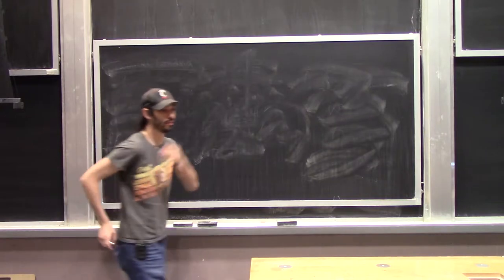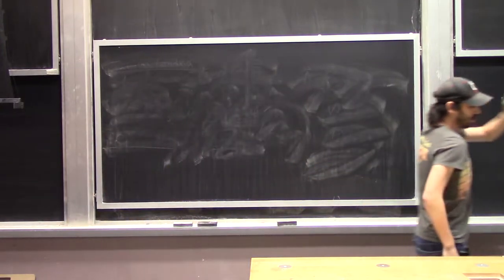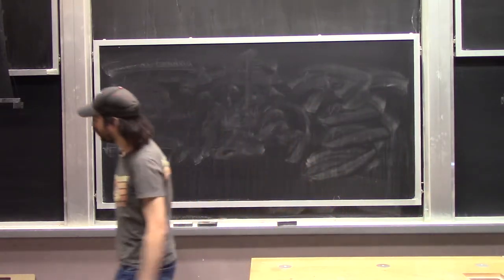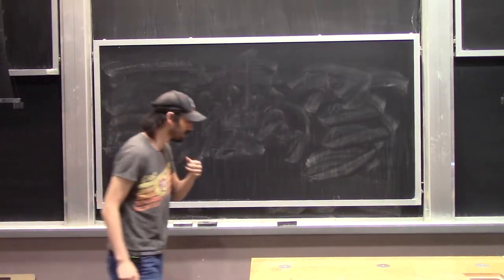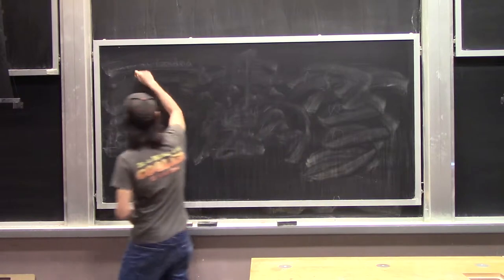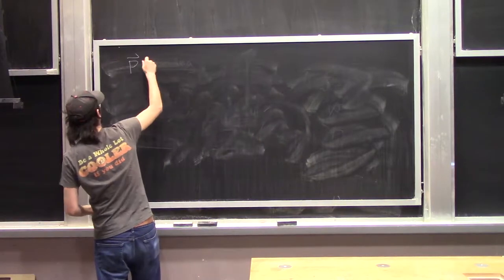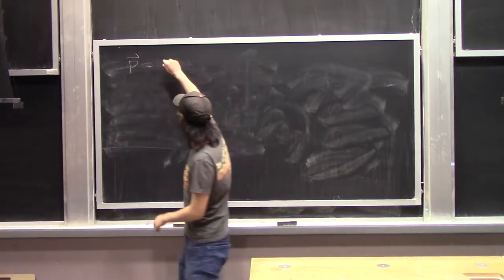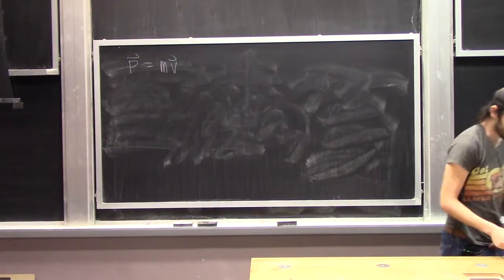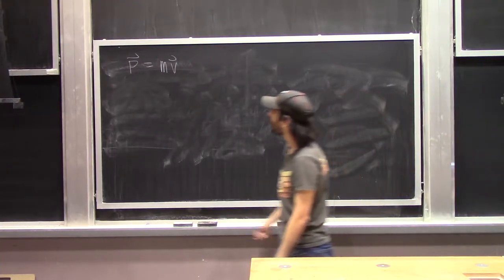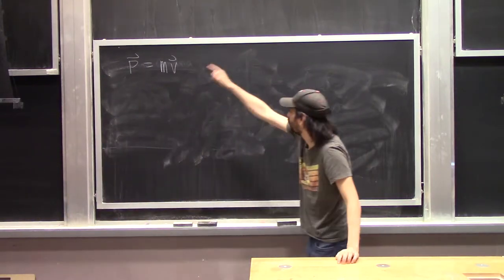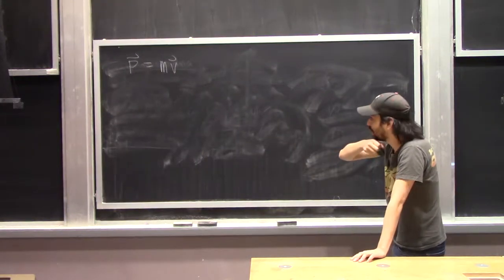Today we're going to be continuing on with momentum. Momentum P, which is a vector, is defined to be the product of the mass of an object and the velocity of an object. So if an object is stationary and not moving, it has no momentum. If it's moving with some velocity and has some mass, the momentum is just the product of the mass and the velocity.